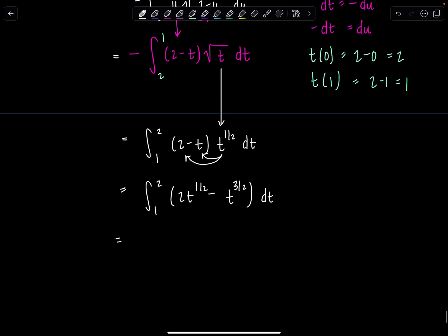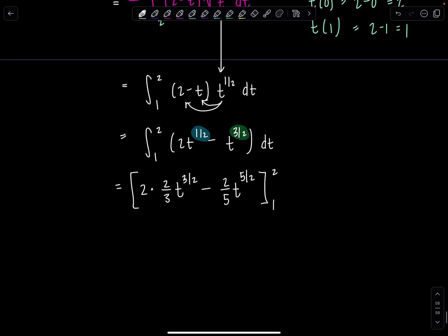We can take the antiderivative. So you add 1 to the exponent, divide by the new exponent. So if I add 1, it'll be t to the 3 halves. Dividing by 3 halves is the same as multiplying by 2 thirds. Minus. And then over here, we're going to have t to the 5 halves. Very good. With a 2 fifths out front. No plus c from 1 to 2. Keep your wits about you.